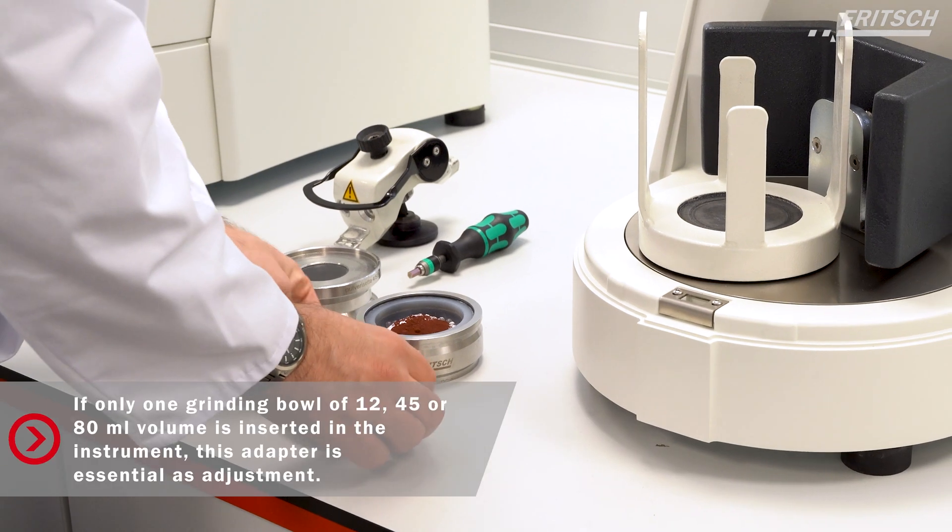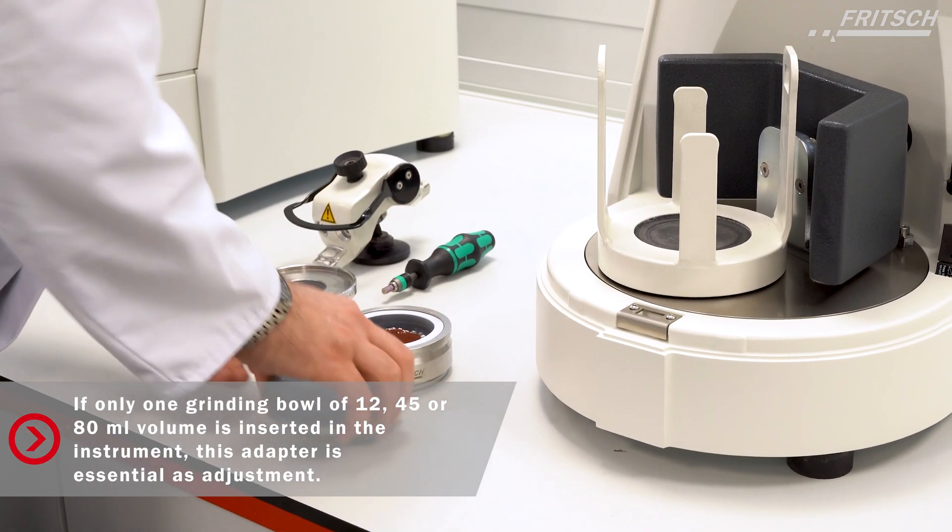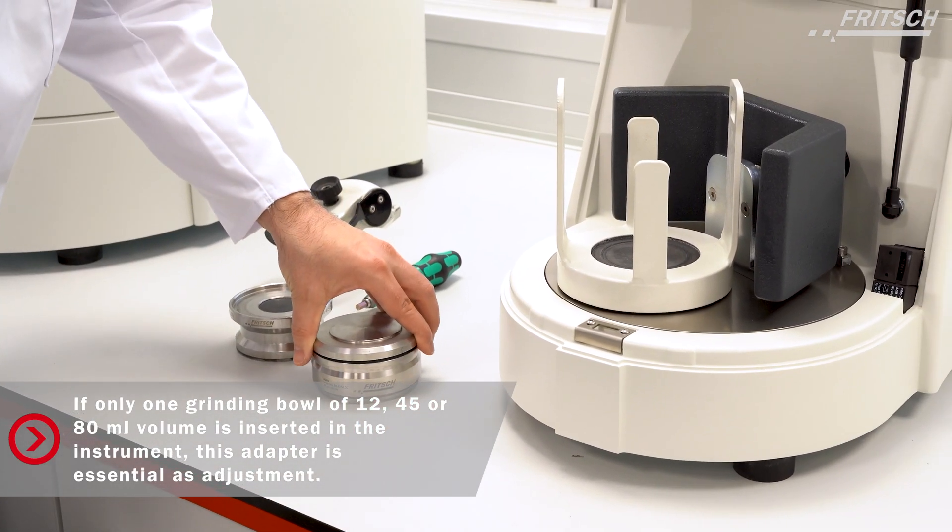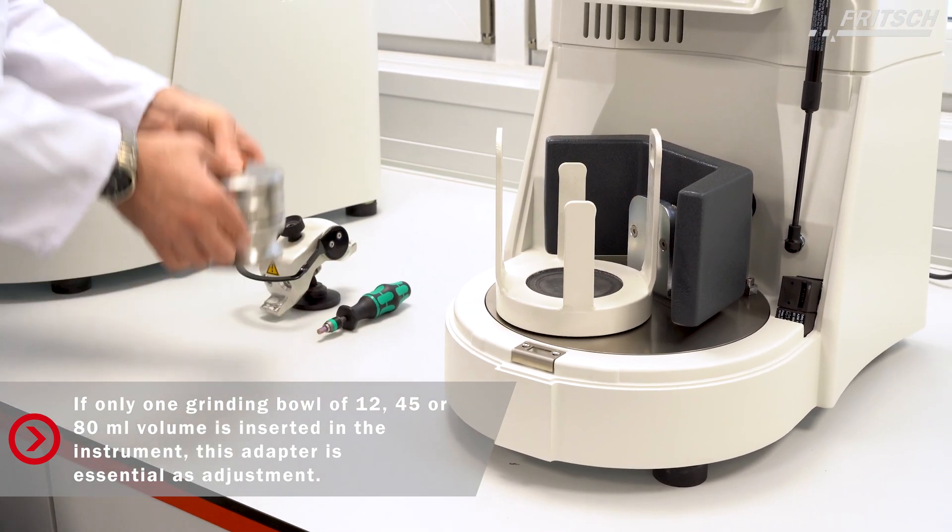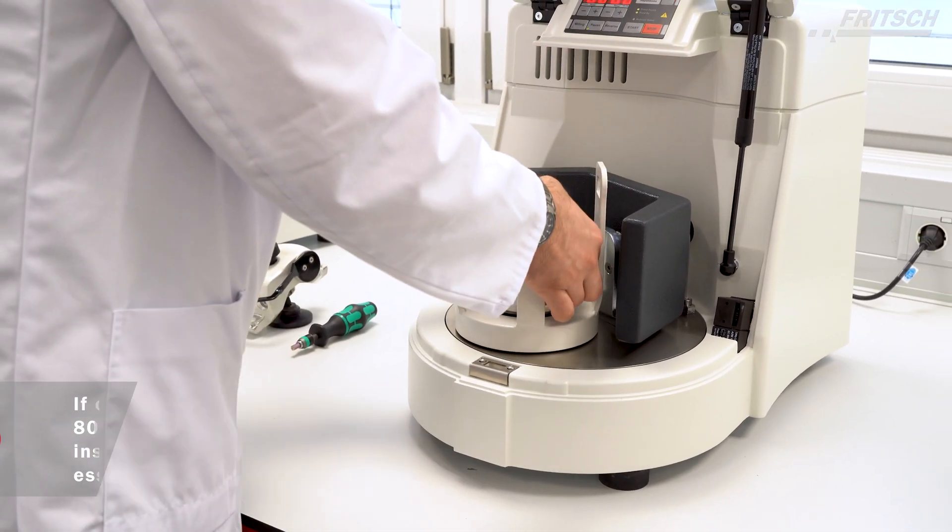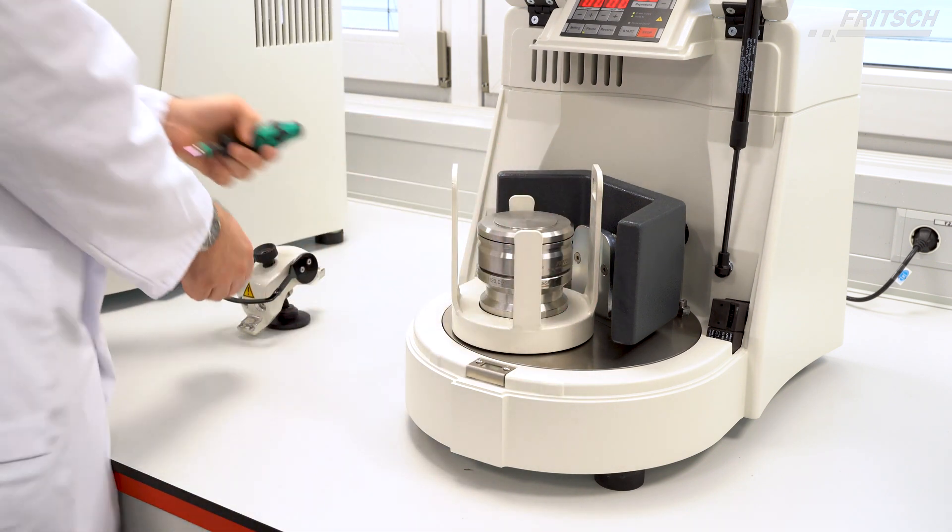If only one grinding bowl of 12, 45, or 80 ml volume is inserted in the Pulverisette 6 classic line or the Pulverisette 5 classic line, this adapter is essential as adjustment.